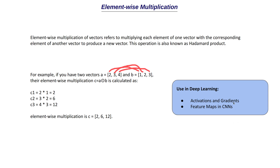The second application of element-wise multiplication is in feature maps in convolutional neural networks (CNNs). In a CNN, element-wise multiplication is mainly used to apply filters to the feature maps, which helps in detecting features. A particular number of filters are assigned to a neuron, performing this filtering or feature map operation, and all of this is based on element-wise multiplication.